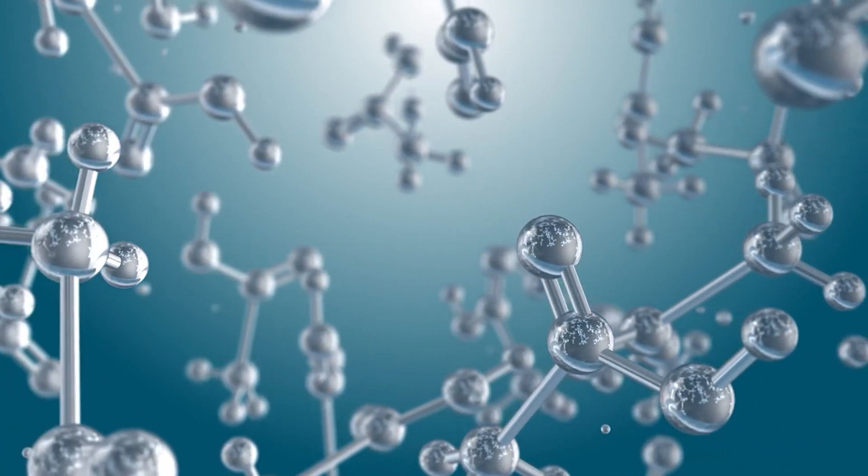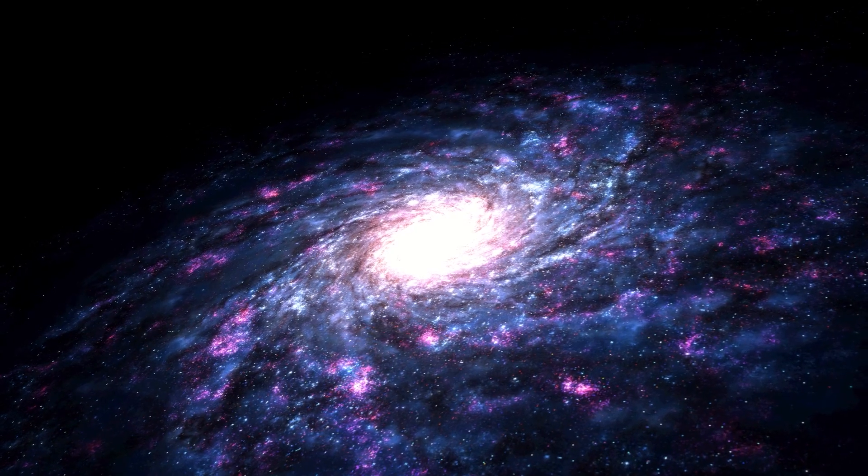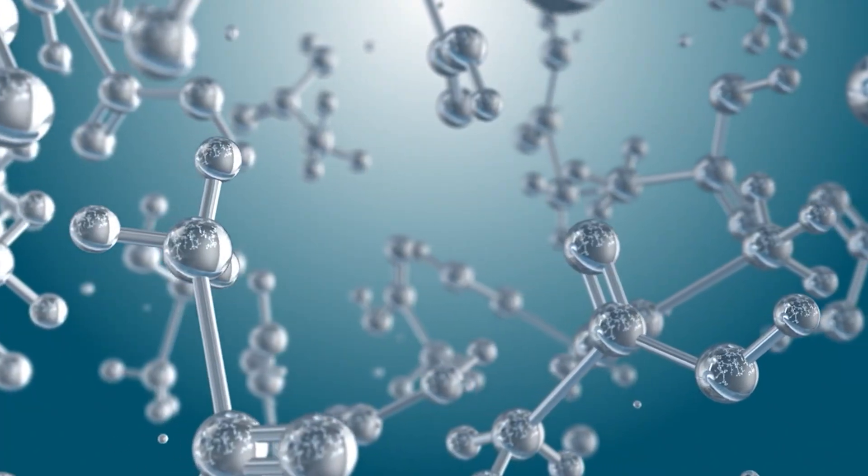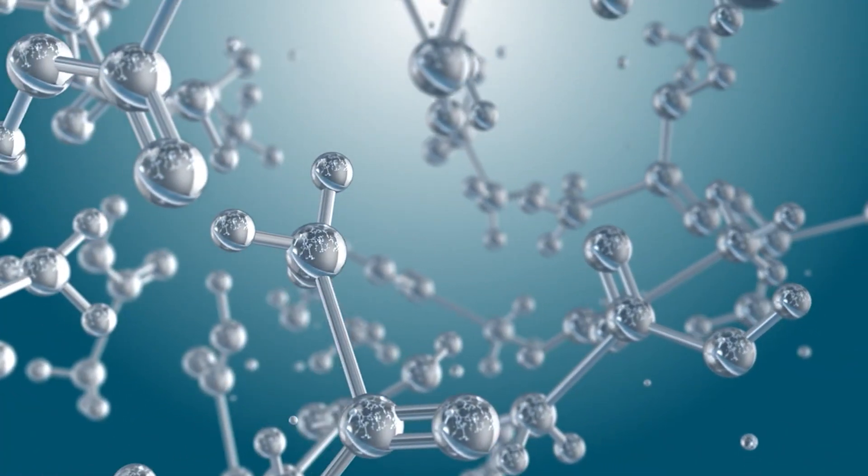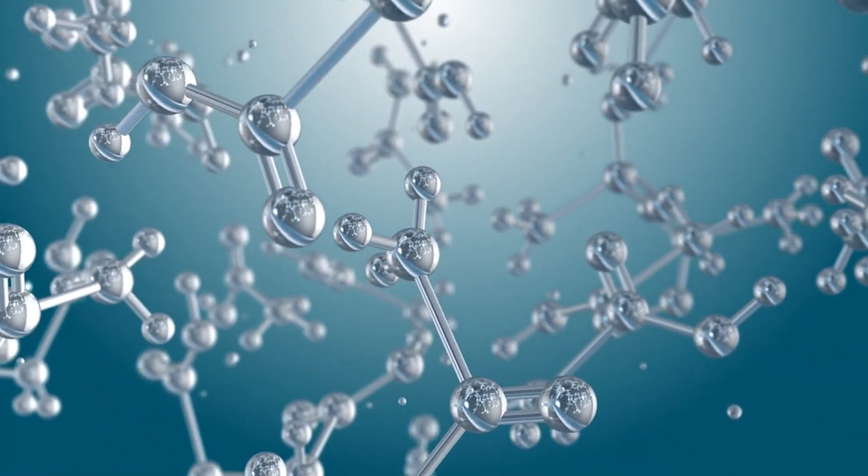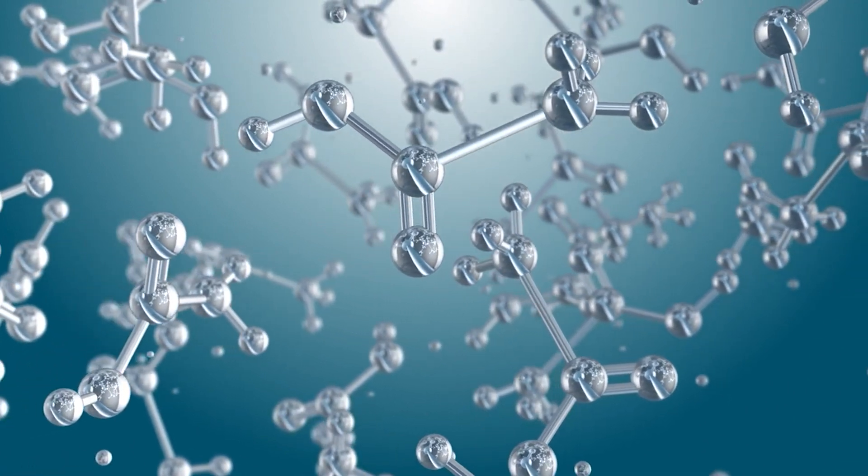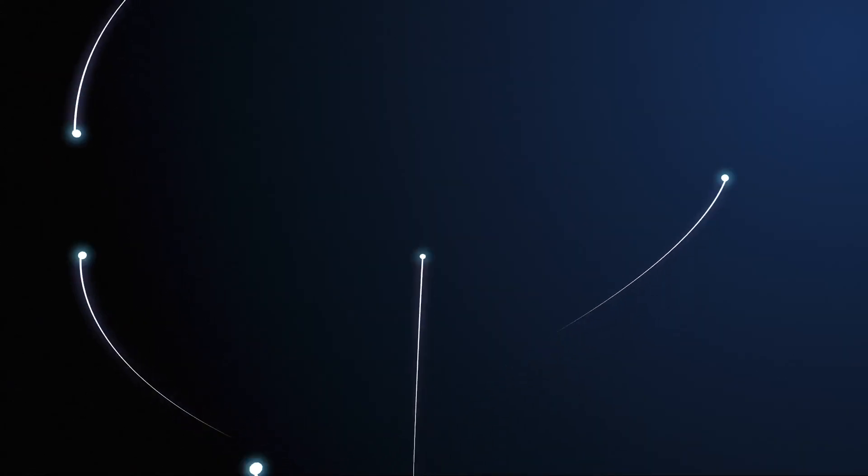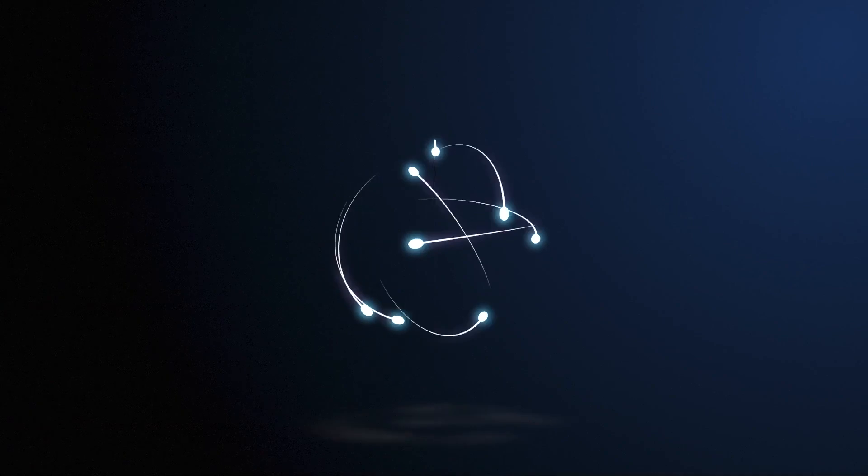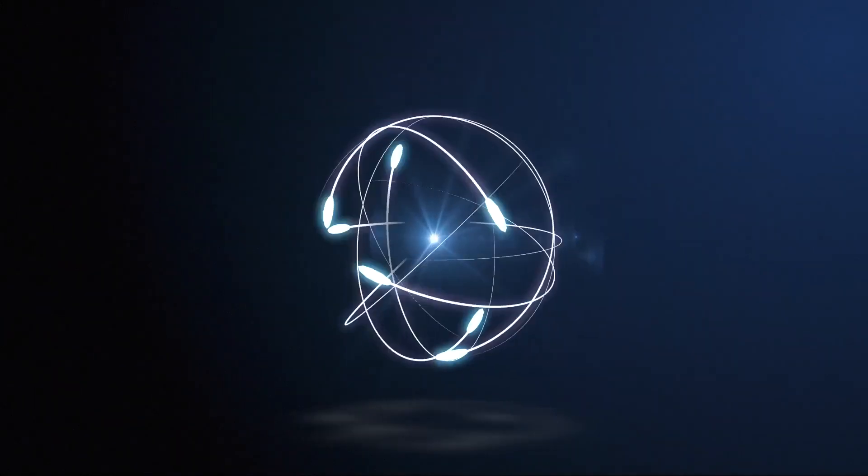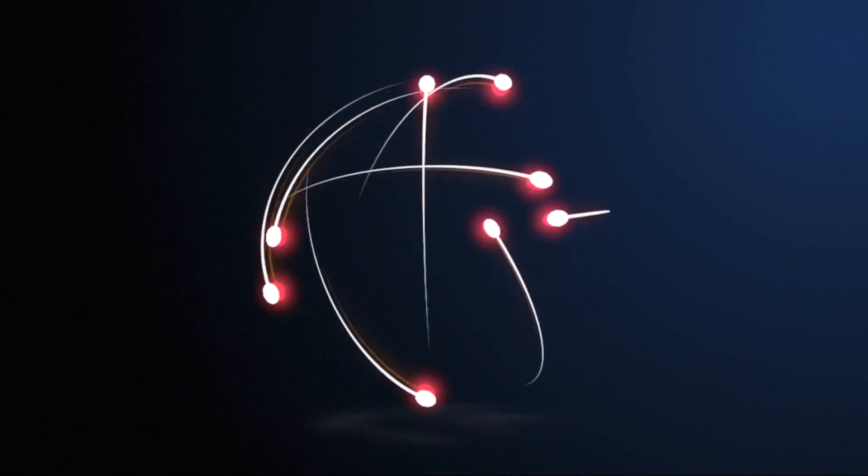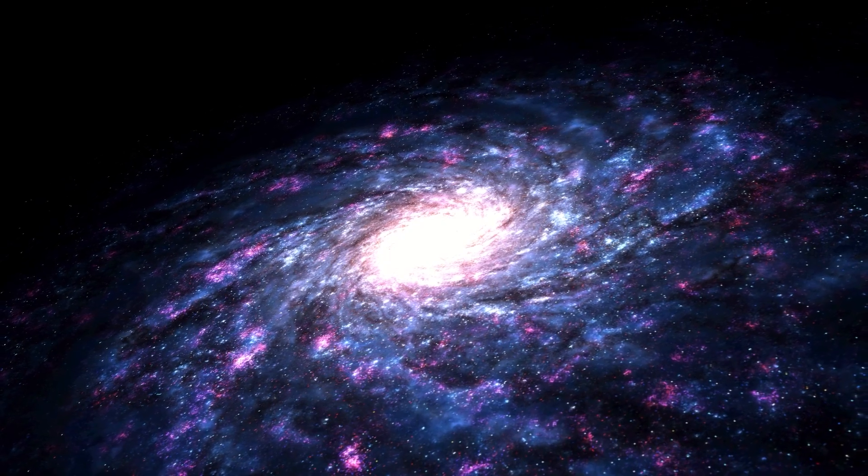And that's where quantum mechanics comes in. While general relativity rules the cosmos, quantum mechanics is the law of the microworld. This theory describes particles like electrons and protons, which don't behave in any way we are used to. Electrons can be in multiple places at once until we measure them, a state called superposition. And particles can even be entangled so that changing one particle instantly affects another, even across galaxies.